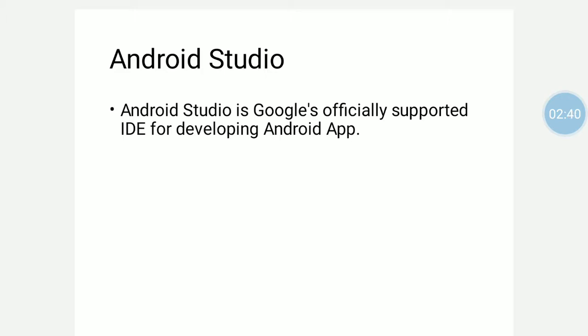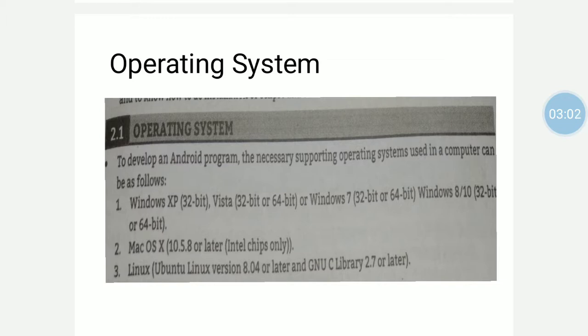Android applications are key components. For example, Java JDK and Android SDK — these are components we will study in this unit. To develop an Android application, we need to know which operating systems are required.